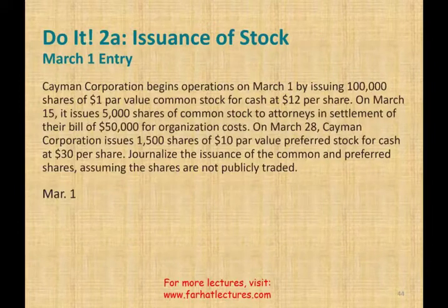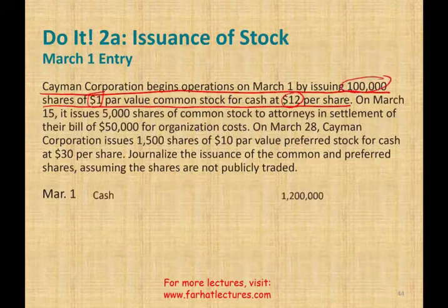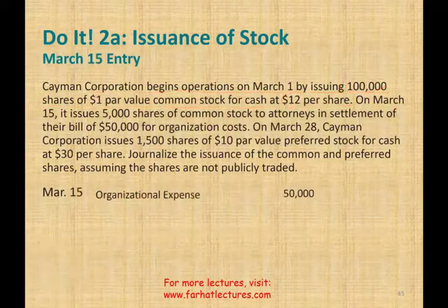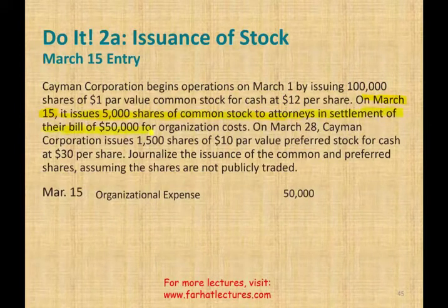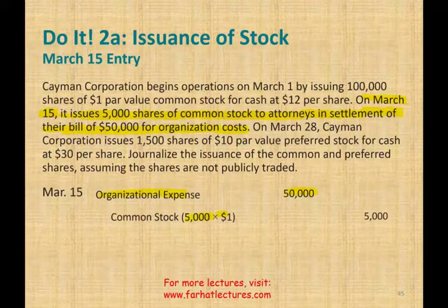Let's look at a few more examples. Kaming Corporation begins operations on May 1st, issuing 100,000 shares of $1 par value common stock for $12 per share. Cash received is $1.2 million. Common stock: 100,000 × $1 = $100,000. Paid-in capital in excess of par: $1,100,000. Second transaction: on March 15th the company issued 5,000 shares of common stock to attorneys in settlement of their bill of $50,000 for organization expense. We don't know the stock value, so we use the bill: debit organization expense $50,000; credit common stock $5,000; credit paid-in capital in excess of par $45,000.